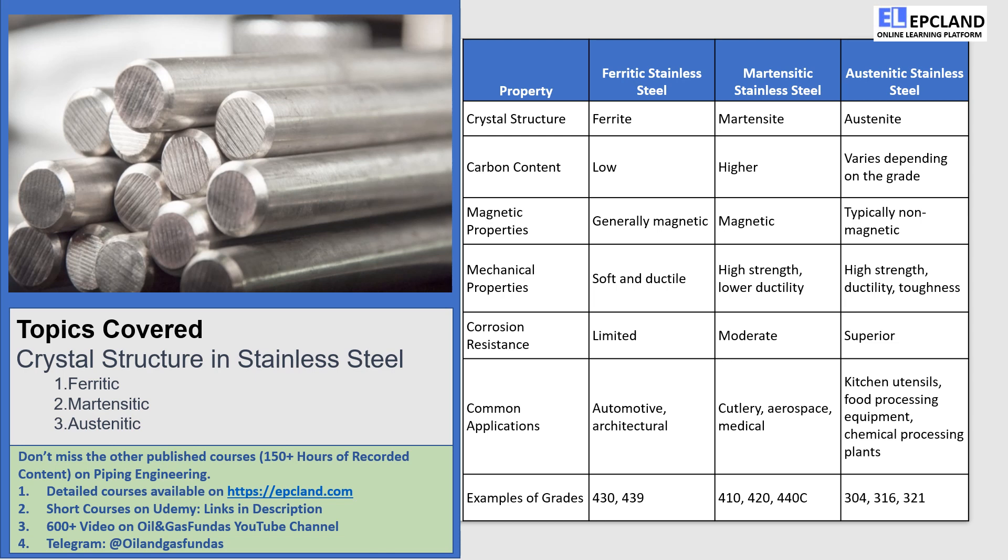Finally, we have austenitic stainless steel. This type of steel has an austenite crystal structure, which is stabilized by the addition of certain alloying elements like nickel. Austenitic stainless steel has excellent mechanical properties including high strength, ductility, and toughness. It's also highly resistant to corrosion and oxidation, making it suitable for a wide range of applications. Austenitic stainless steel is typically non-magnetic, although some grades may exhibit slight magnetism under specific conditions.